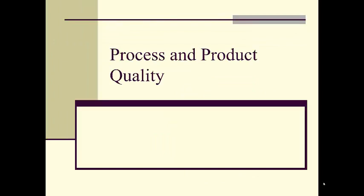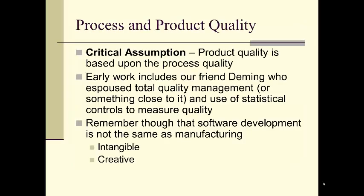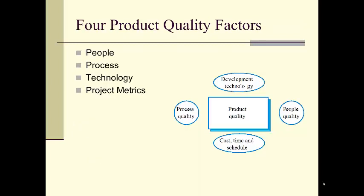Process and product quality: what we're going for with process improvement is an increase in product quality. The critical assumption is that product quality is based on process quality — if you don't believe that, then all bets are really off. Early work in this area includes Deming, who espoused total quality management and the use of statistical controls to measure quality of process and product. Remember that software development is not the same as manufacturing because software is intangible and is a very creative process. Four product quality factors are people, process, technology, and process metrics.